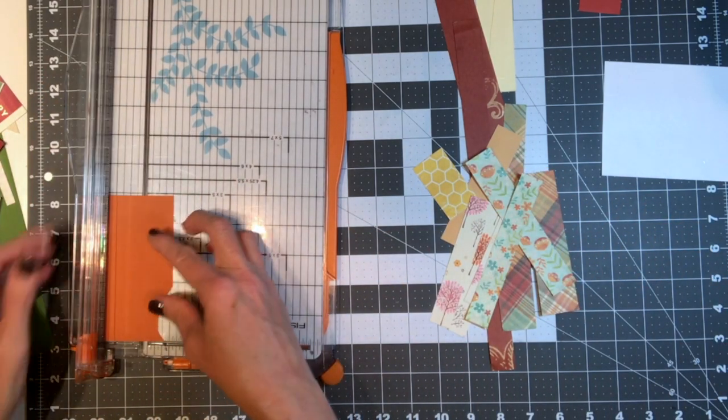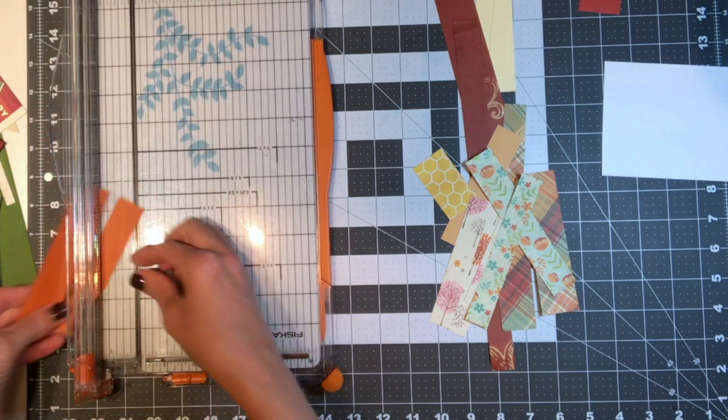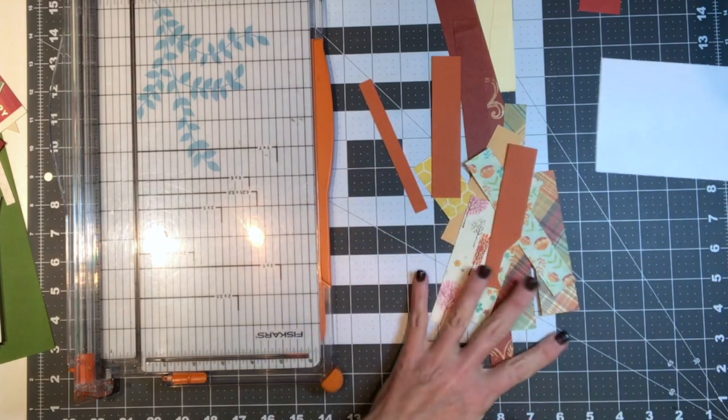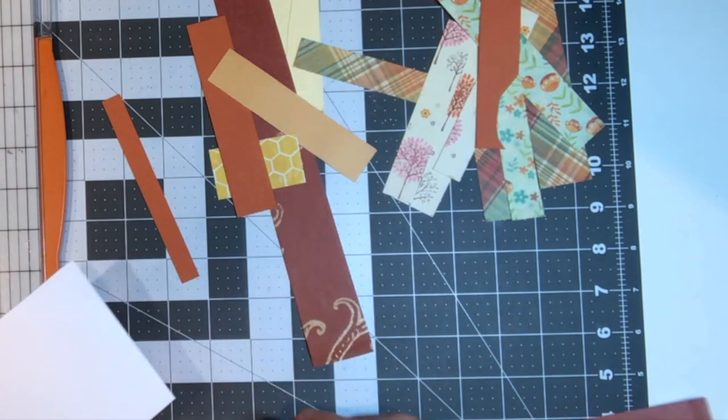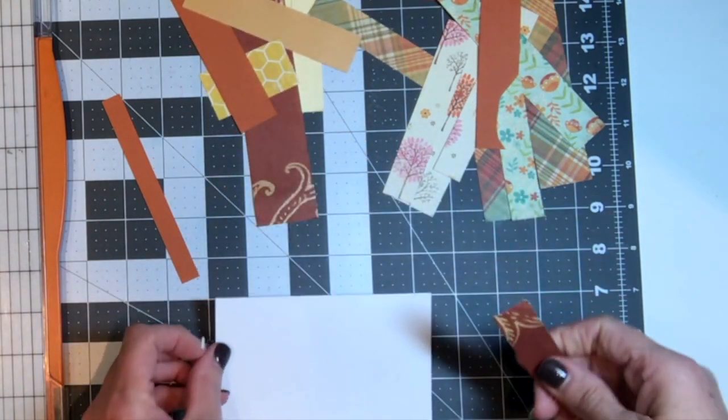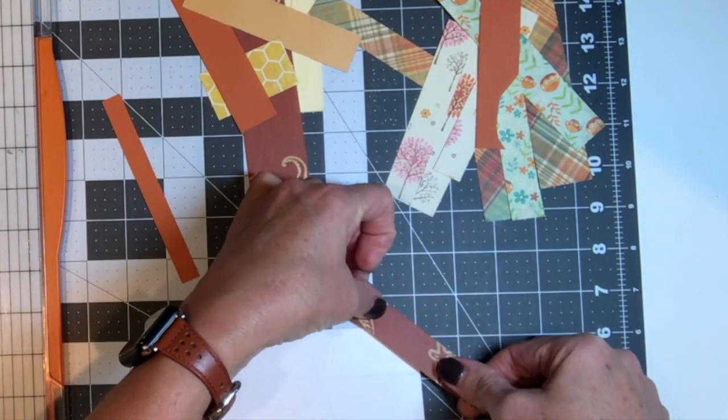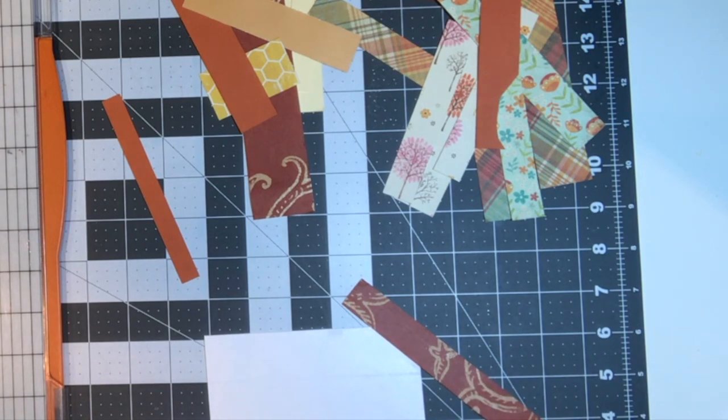So once you have the strips cut down, you're just basically going to lay them on your paper. And since it's already sticky, it makes the job super easy. You can just go ahead and press those down and they'll stay put. Generally, what I would suggest that you do is use the longer pieces of paper for the midsection of your card.